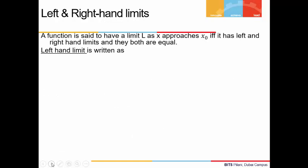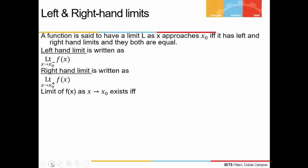How do we define left and right hand limits? A function is said to have a limit L as x approaches x₀ if and only if it has both a left and a right hand limit and they are equal. The left hand limit is found when we approach x₀ from the left, written as lim f(x) as x → x₀⁻. The right hand limit is written as lim f(x) as x → x₀⁺, approaching from the right. The limit exists if and only if both are equal to each other.